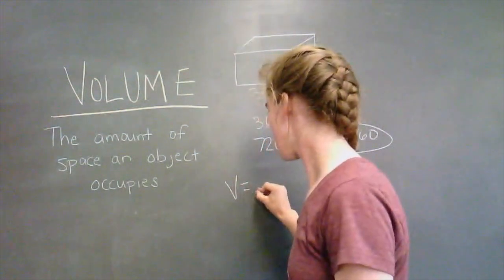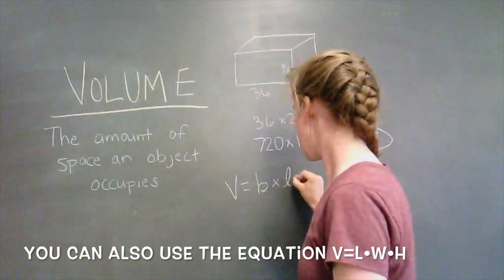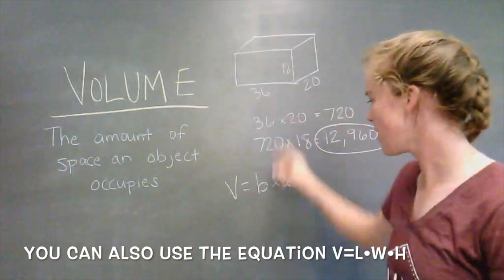For volume of a rectangular prism, we use the equation base times length times height. And in this problem, our base is 36, our length is 20, and our height is 18.